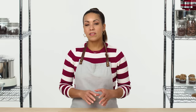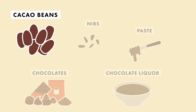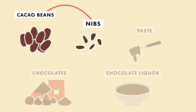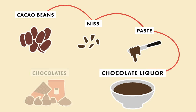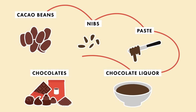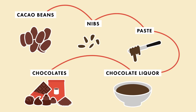The chocolate-making process essentially goes something like this: cacao beans are broken down into nibs, the nibs are ground finely into a paste, the paste gets melted into what's called chocolate liquor, and then the liquor gets distributed to make the various types of chocolate.